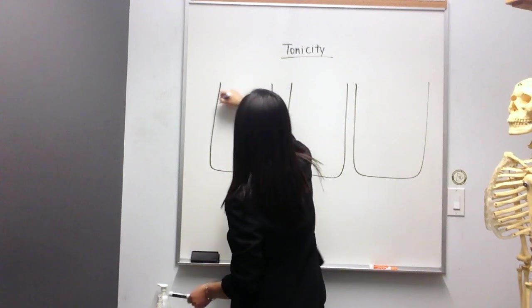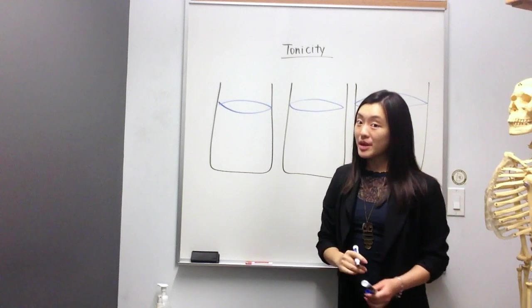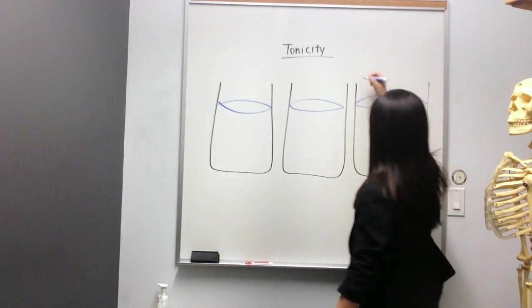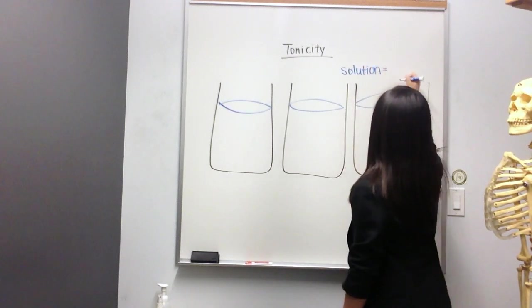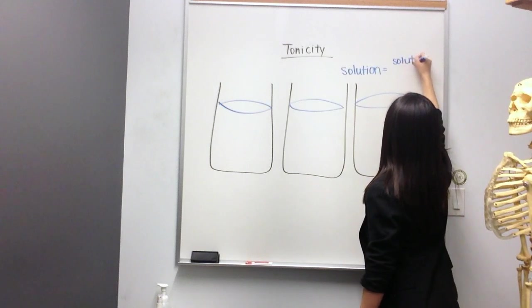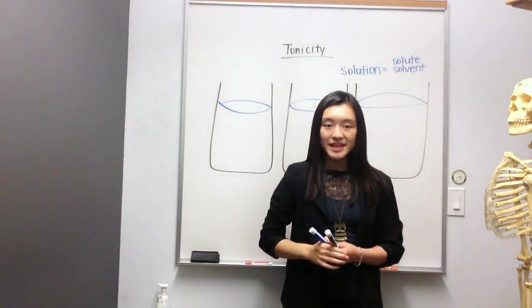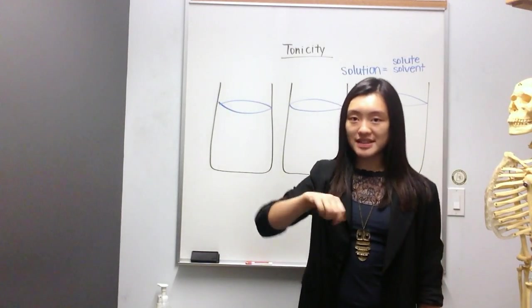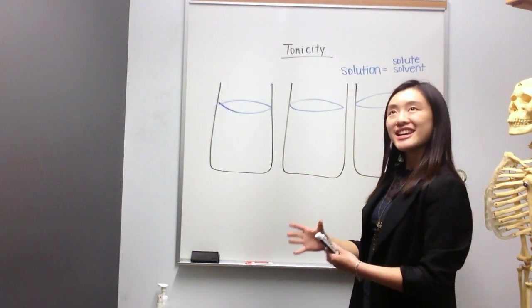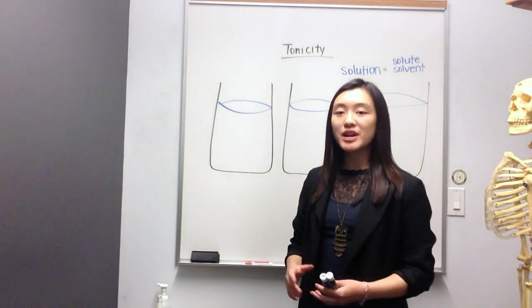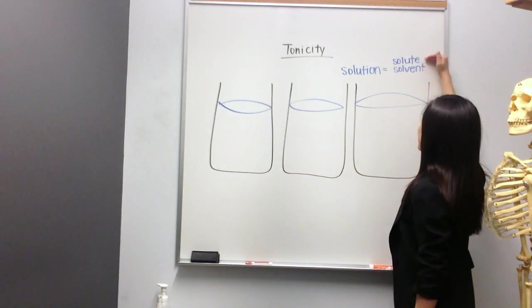All of these beakers are full of a solution. I'd like to take a moment just to emphasize what a solution is. A solution has two parts. It's made up of a solute and a solvent. The solute is the thing that is dissolved inside, for example, sugar or salt. And the solvent is the liquid or the gas, the fluid that does the dissolving. So we have the dissolver and the thing that is dissolved.